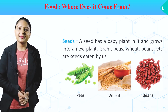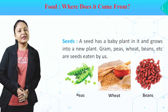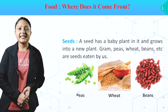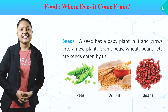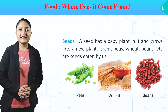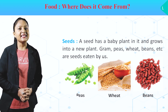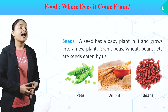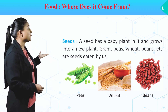Seeds. A seed has a baby plant in it and grows into a new plant. Gram, peas, wheat, beans, etc. are seeds eaten by us. Toh hum jo kuch seeds khate hai unke examples hain — gram, peas, wheat, beans, etc. And they are given in these pictures also.